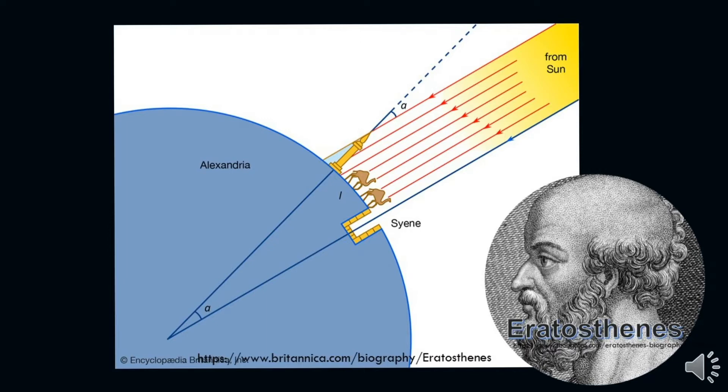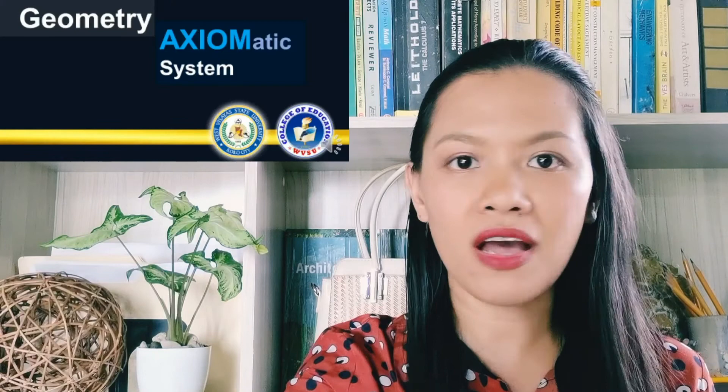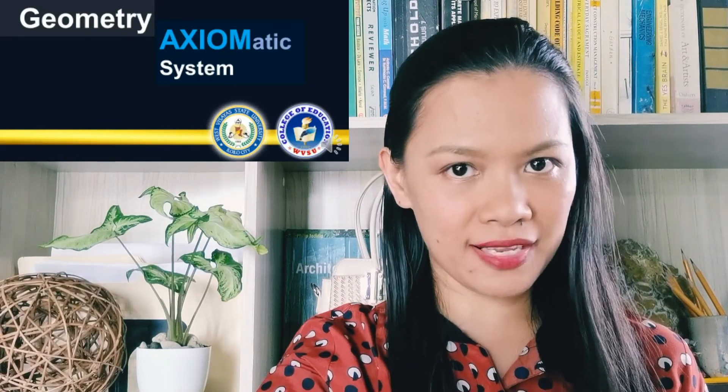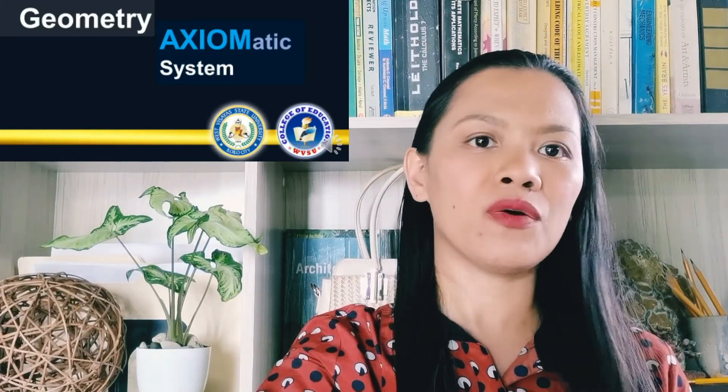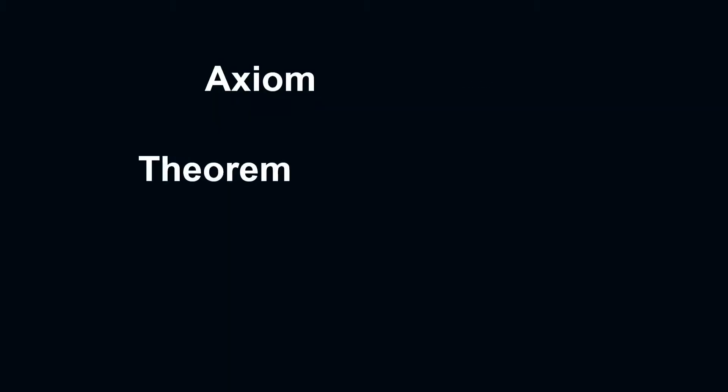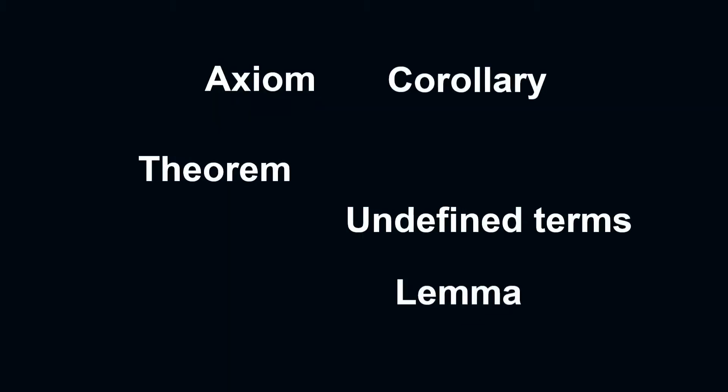However, these days, geometry as a subject is not just about the measurement of the Earth. We go beyond that notion that we are just going to measure the Earth. Geometry is an axiomatic system. We deal with axiom, theorem, corollary, lemma, undefined terms, and postulate.